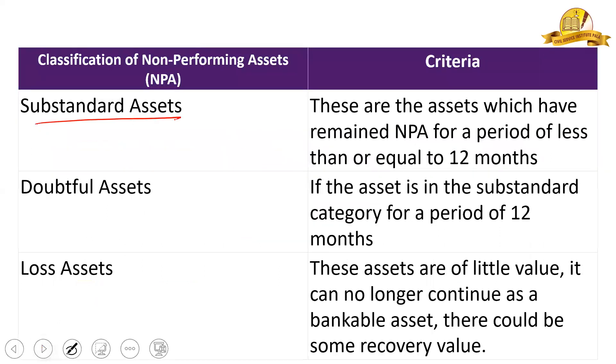NPAs are classified into three types based on different parameters. The first one is substandard assets. These are the assets which have remained NPA for a period of less than or equal to 12 months.